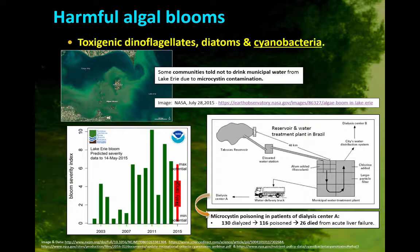This is a big topic, so we'll focus on some of the more prominent cyanobacterial toxins. These have caused problems in freshwater lakes, reservoirs, and slow-moving streams, and occasionally in the ocean as well. Here's a picture of Lake Erie showing an algal bloom, and in recent years, communities have been told not to drink the water because of microcystin contamination. This graph in the lower left-hand corner shows the bloom severity index, which is pretty substantial in recent years.